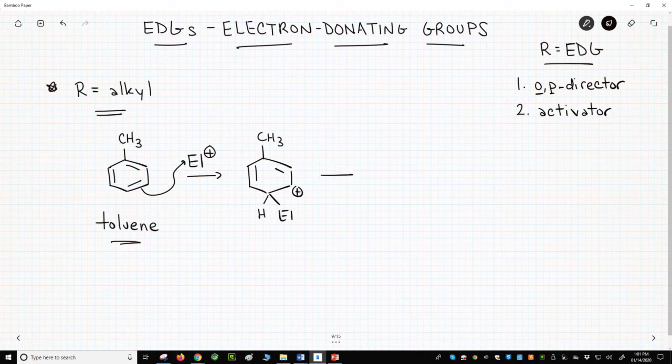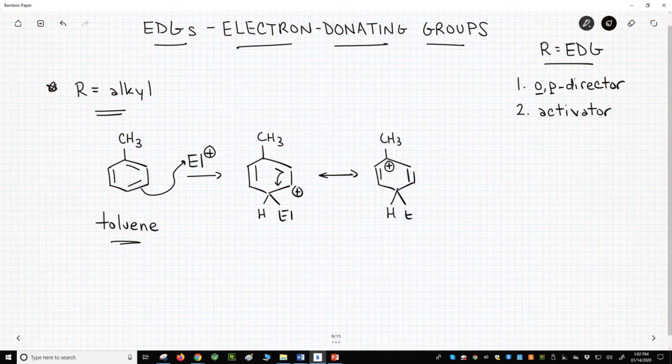If we explore other possible resonance forms, we can draw another structure that puts the positive charge right next to our electron donating alkyl group. The alkyl group stabilizes the carbocation through hyperconjugation.